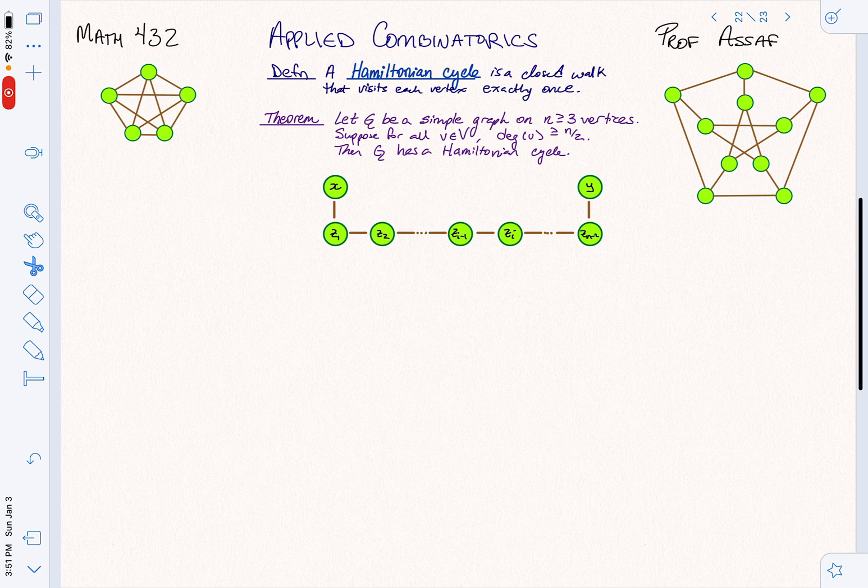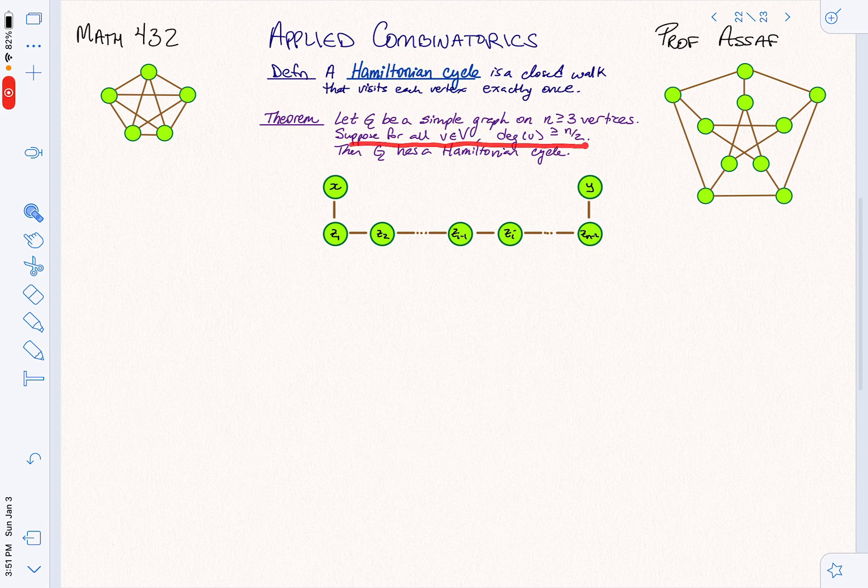And so we'll make it with the following theorem. Let G be a simple graph on at least three vertices. A simple graph, meaning no loops, no multiple edges. And suppose for every vertex, the degree is at least half the number of vertices. That means that for every vertex here, I go to at least half the other vertices as neighbors. That doesn't happen here. You can see in the Peterson graph, we have 10 vertices and the degree of each vertex is only three, which is a lot less than five.